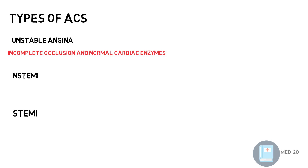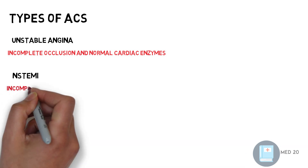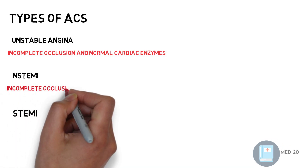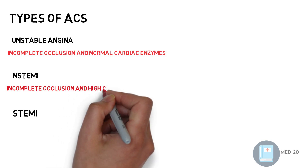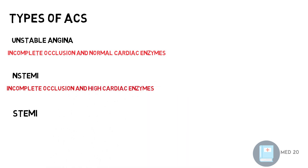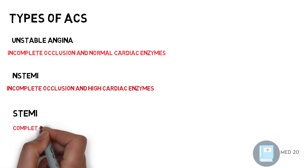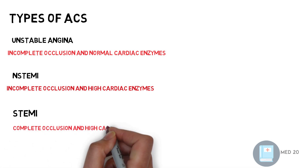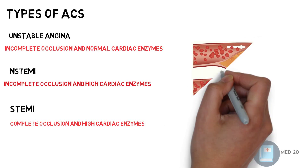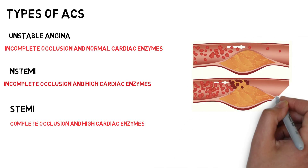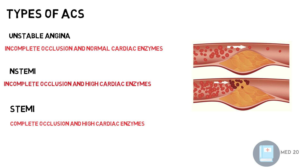If unstable angina is untreated, it may complicate into non-STEMI or STEMI. Non-STEMI is incomplete occlusion with high cardiac enzymes, and STEMI is complete occlusion with high cardiac enzymes. In the first picture, incomplete occlusion indicates unstable angina or non-STEMI depending on the cardiac enzymes. In the second photo, complete occlusion of the artery indicates STEMI.